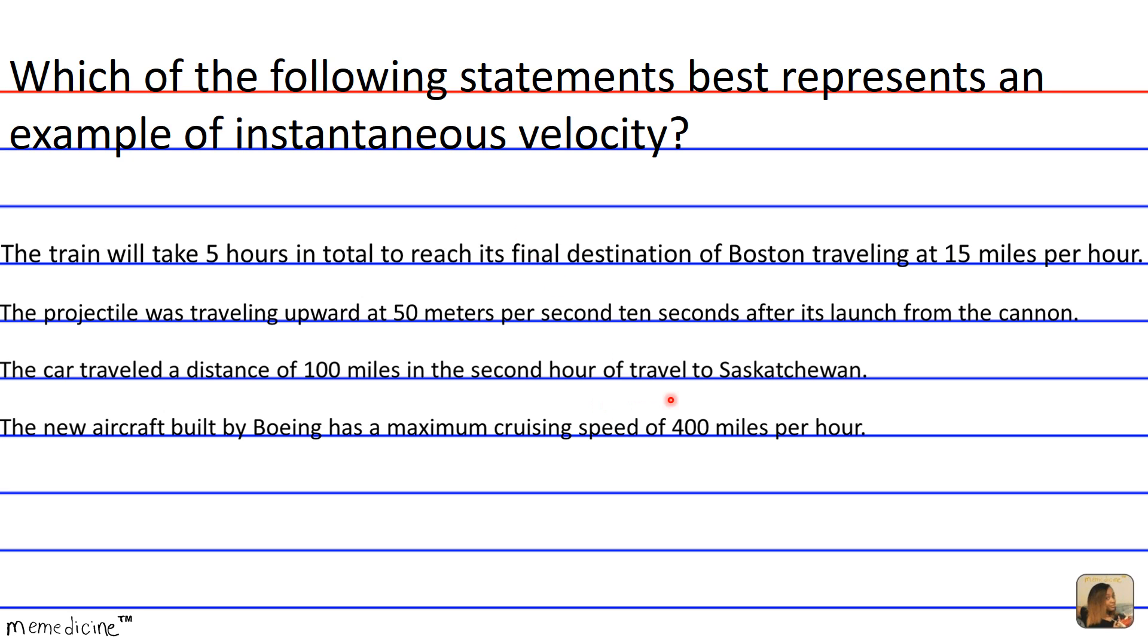So if we examine answer choice D, by saying the aircraft has a maximum cruising speed of 400 miles per hour, it is still only a potential value to attain. When or whether it actually reaches this velocity, we don't know.